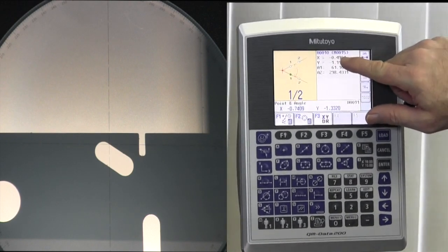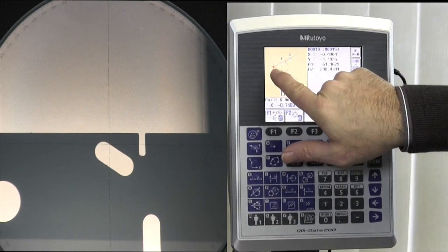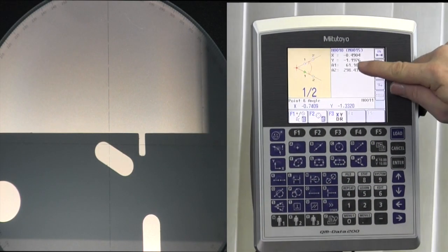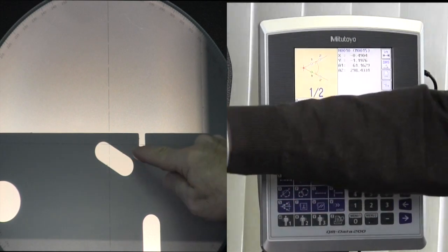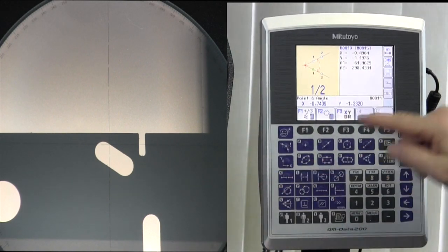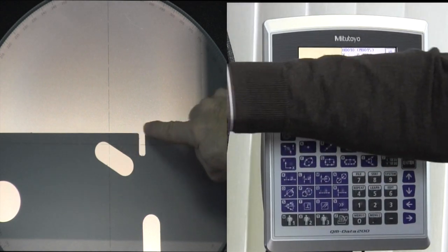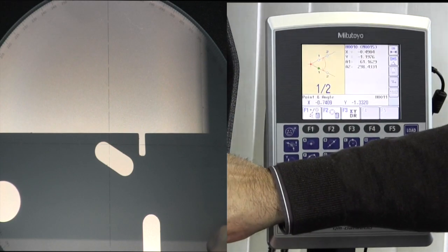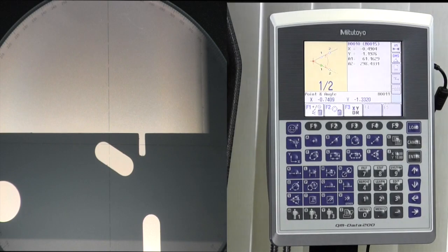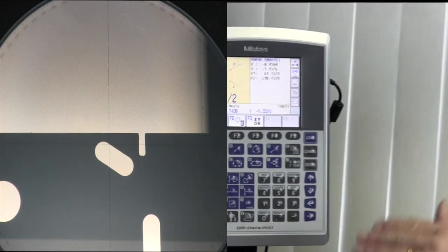It gives us the x and y intersection. It gives us the inside angle, 61.163 degrees, and it gives us the outside angle, 298.433 degrees. So just like with all the others, one button, pick a few points, bam, we've got the information we need.